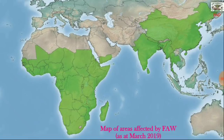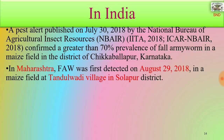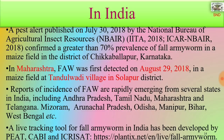The map of area affected by fall army worm as of March 2019 shows Africa, the Indian subcontinent, China and other south-eastern Asian countries. In India, a pest alert published on July 30, 2018 by the National Bureau of Agricultural Insect Resources confirmed greater than 70% prevalence of fall army worm in a maize field in Chikapallarpur district, Karnataka. In Maharashtra, fall army worm was first detected on August 29, 2018 in a maize field at Tandurwadi village in Cholapur district. Reports are emerging from several states including Andhra Pradesh, Tamil Nadu, Maharashtra, Telangana, Mizoram, Arunachal Pradesh, Odisha, Manipur, Bihar, West Bengal, etc. A life tracking tool for fall army worm in India has been developed by PEAT, CABI and ICRISAT.